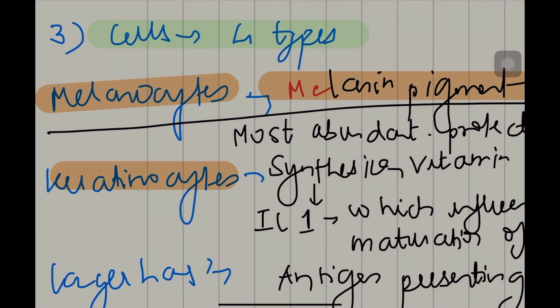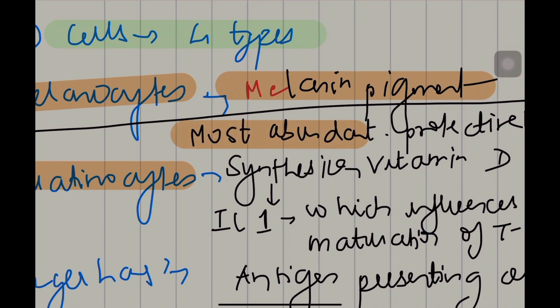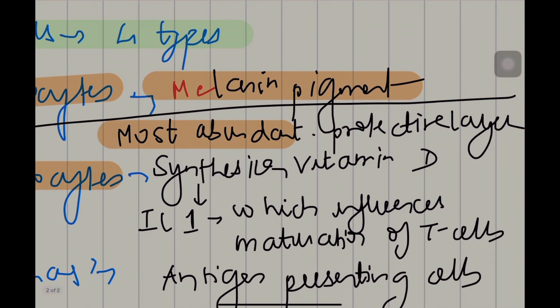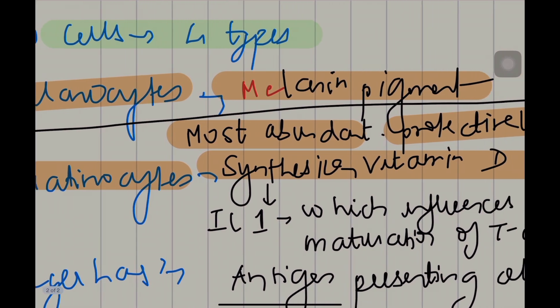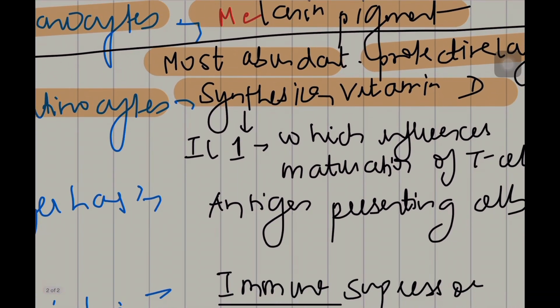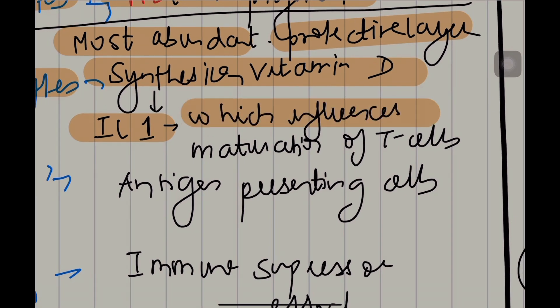The next type of cells is keratinocytes. This is the most abundant layer in the epidermis. It is the protective layer. Synthesis of vitamin D takes place in the keratinocytes. Also there is synthesis of interleukin-1 (IL-1) which influences maturation of T cells.